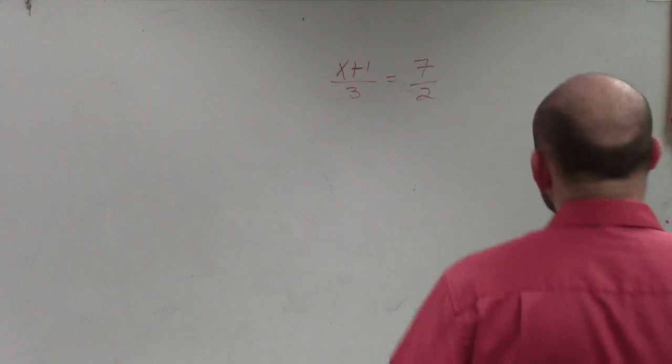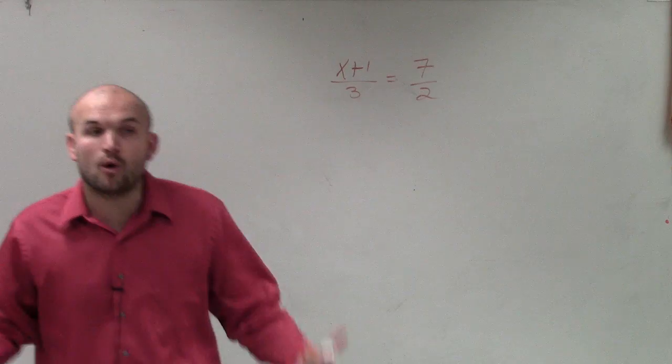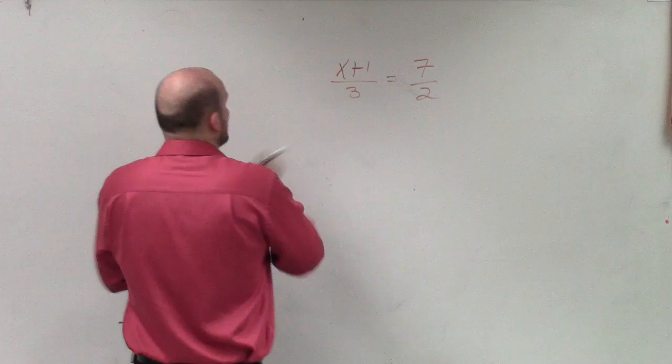So what I have here is x plus 1 over 3 equals 7 over 2. So again, guys, whenever you see a proportion, meaning a ratio set equal to another ratio, we can apply our cross multiplication.